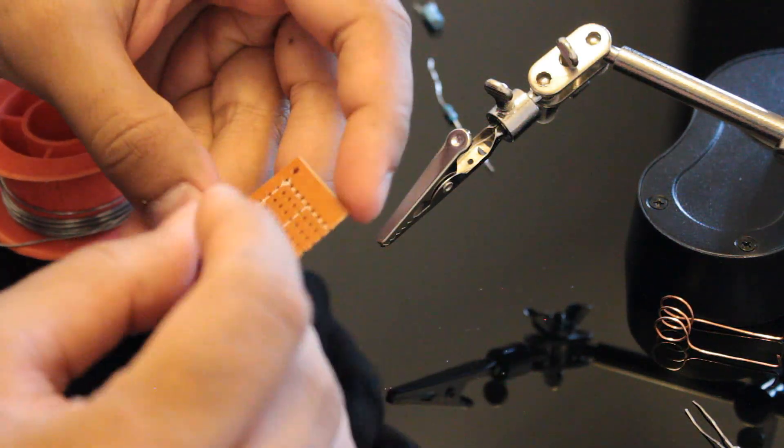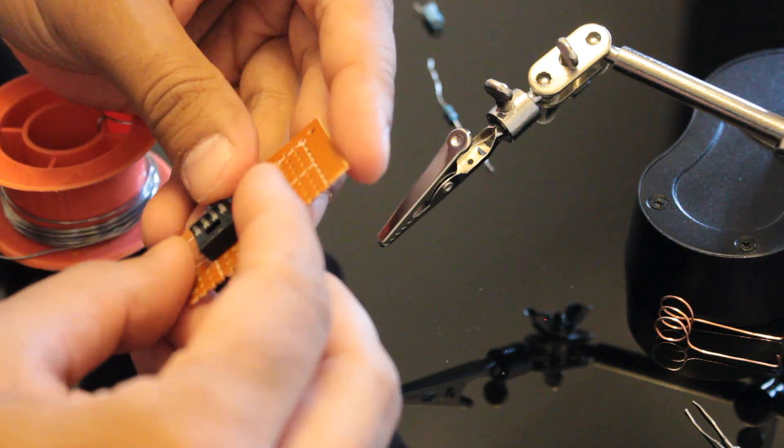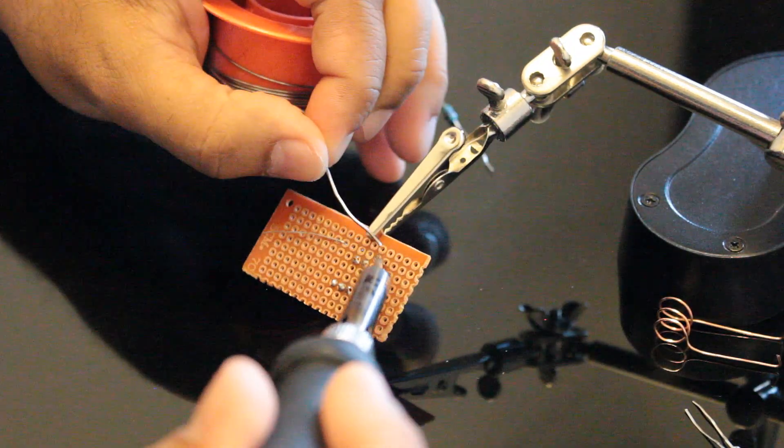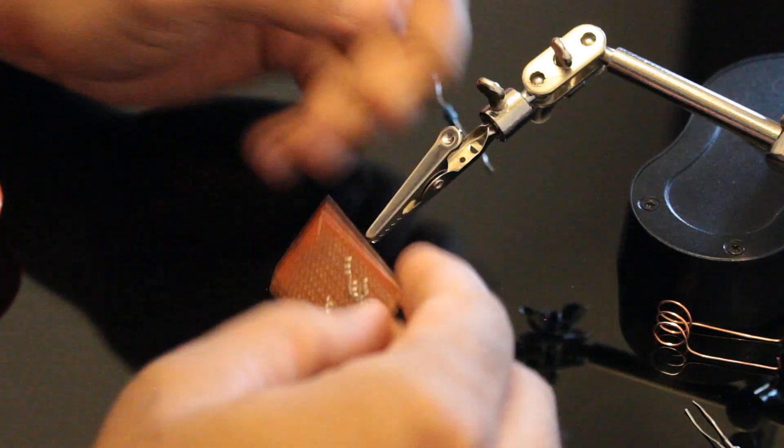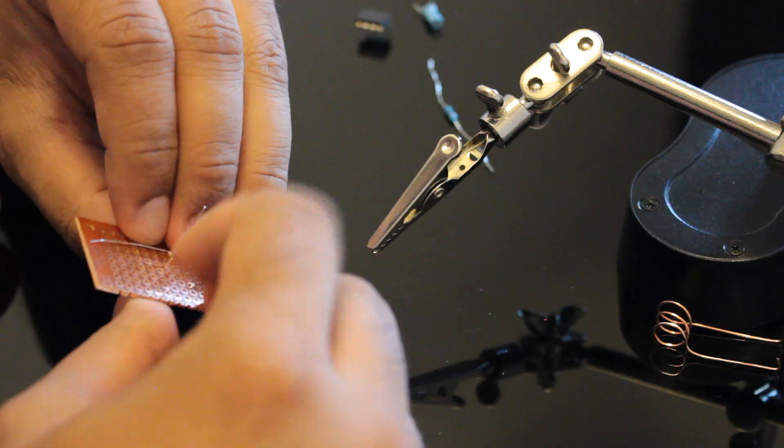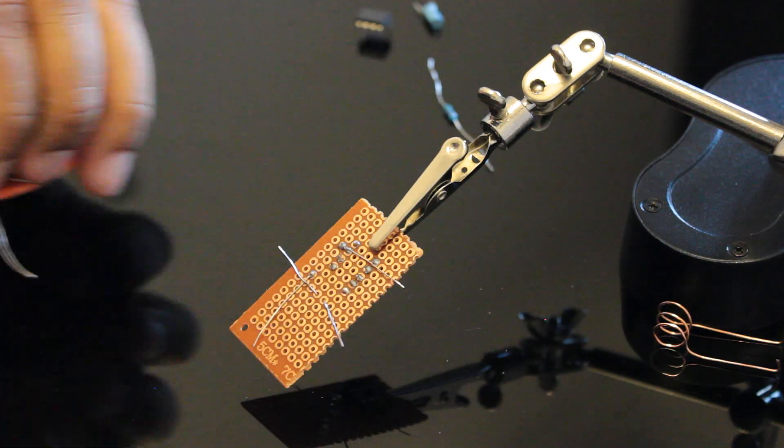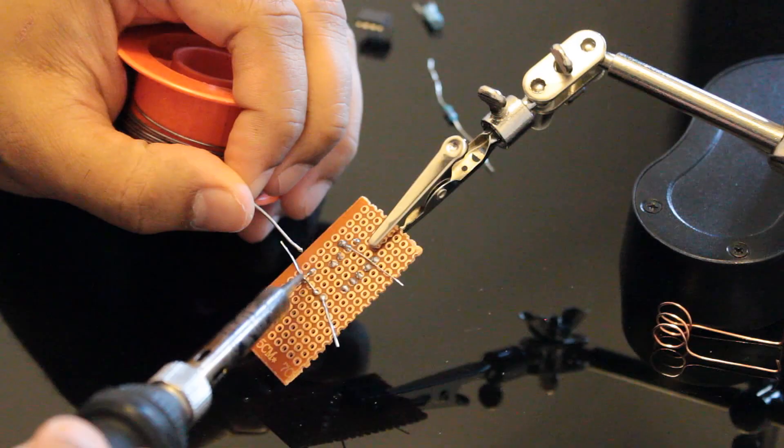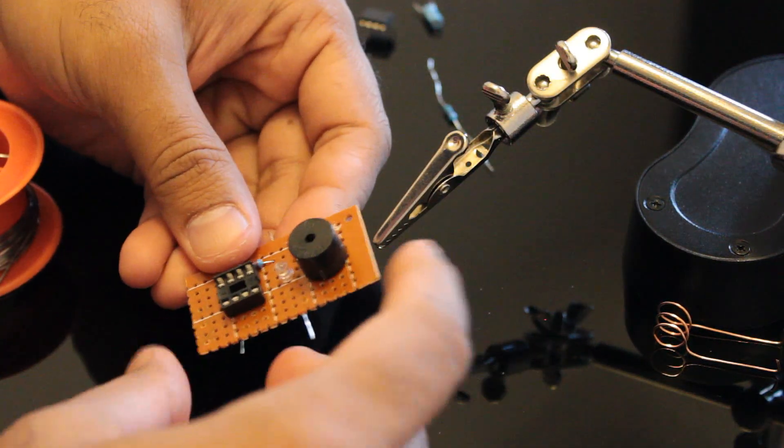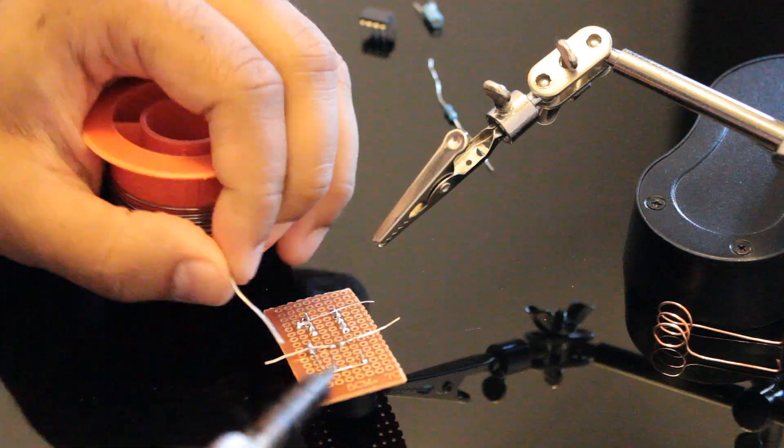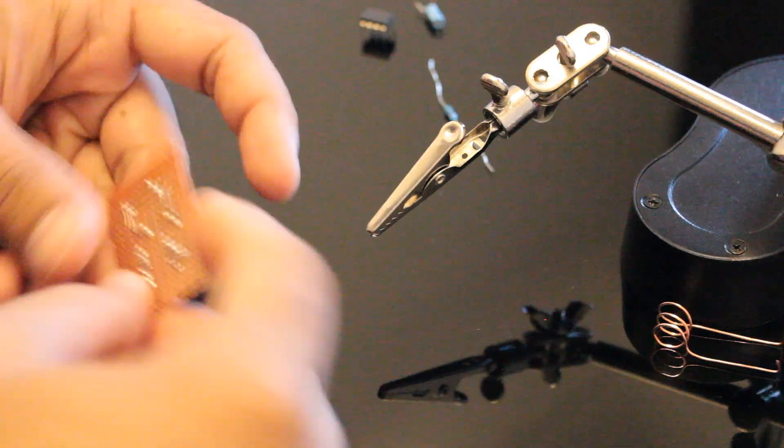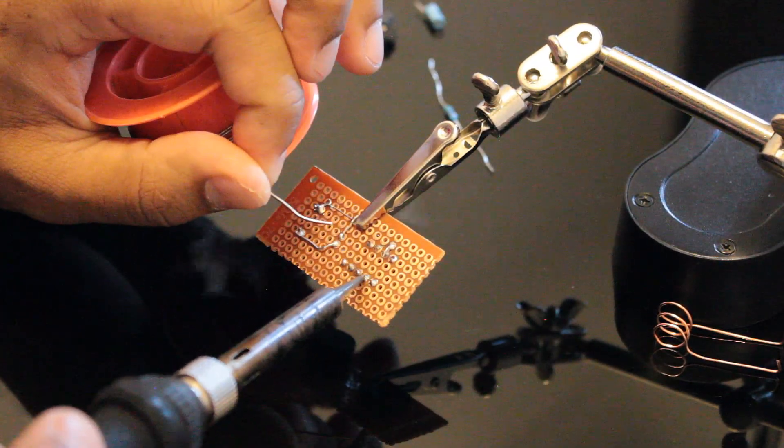Next I'm soldering the 220 ohm resistor, LED and the buzzer to pin number 3 of the IC.